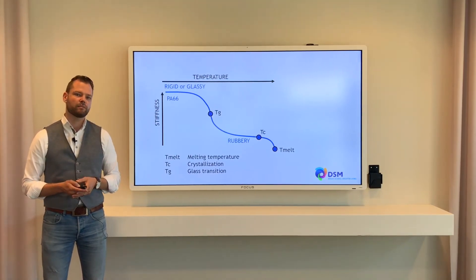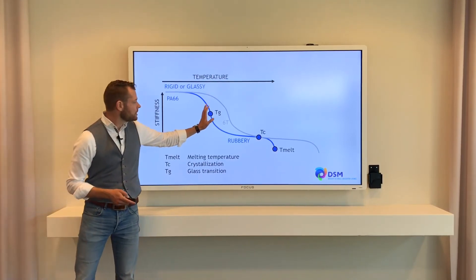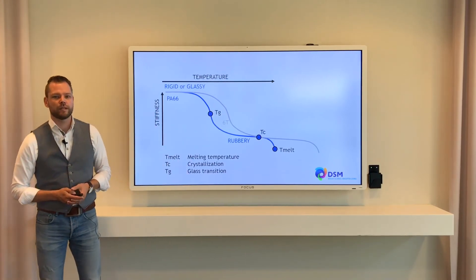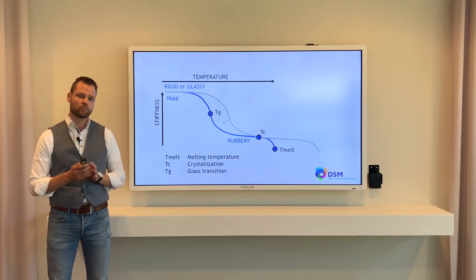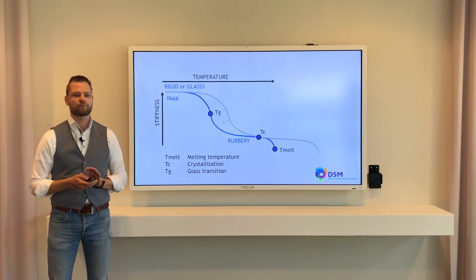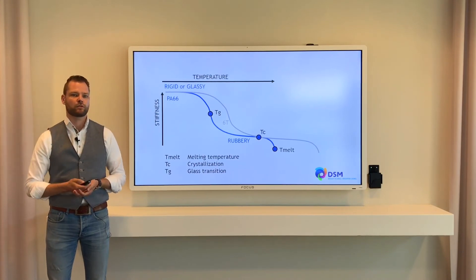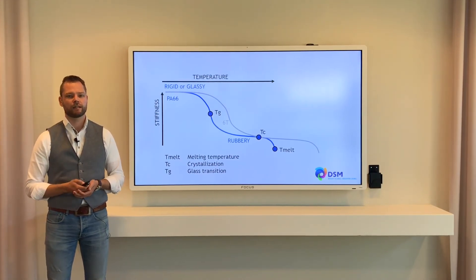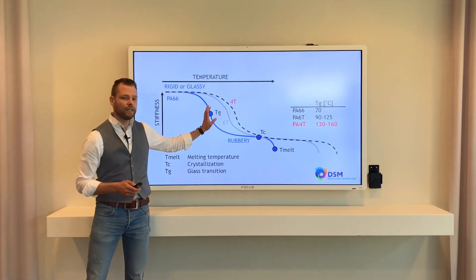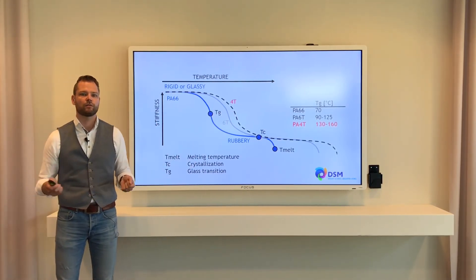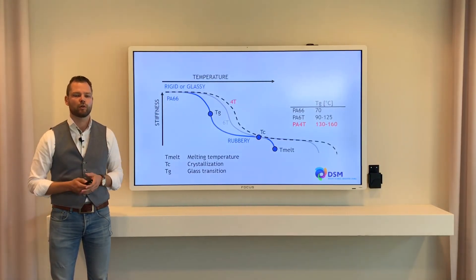How does a PPA differentiate? With a PPA — the 6T that we just explained — the glass transition temperature can be increased from, for example, 70 degrees up to 125 or 130 degrees Celsius, so the operating temperature is increased. The melt temperature is also increased, meaning you can deal with higher peak temperatures as well. There are also polymers called PA 4T, also a PPA, where you can boost the glass transition temperature to around 160 degrees Celsius, further expanding the operating window.